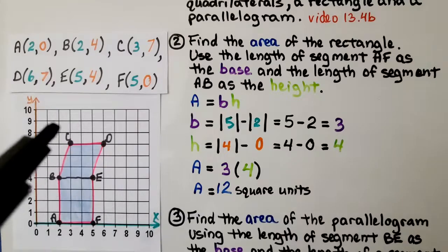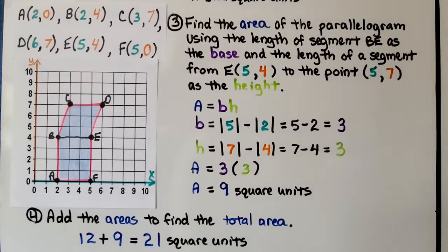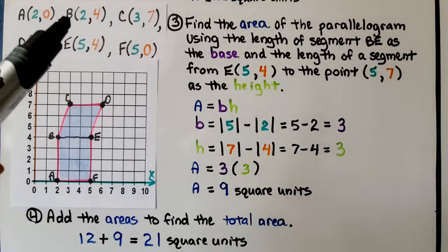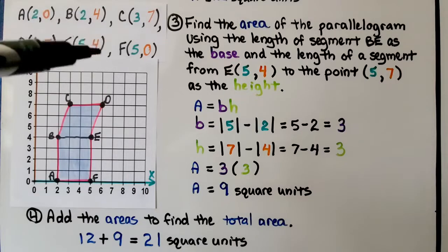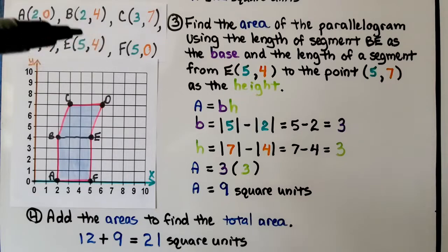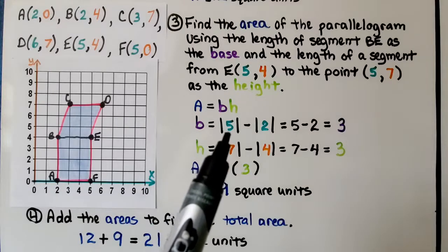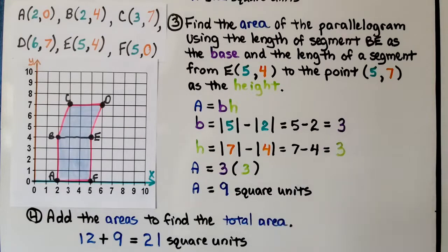Now we have to find the area of the parallelogram, step 3. For the area of the parallelogram, we're going to use segment BE as our base. B is at (2, 4) and E is at (5, 4). They have the same Y coordinate, so we use the X coordinates: the absolute value of 5 minus the absolute value of 2, which gives us 3 for our base.